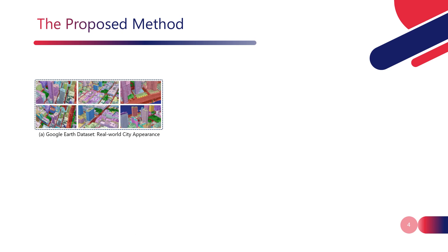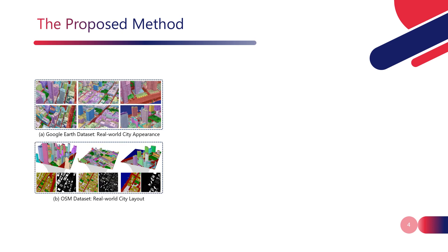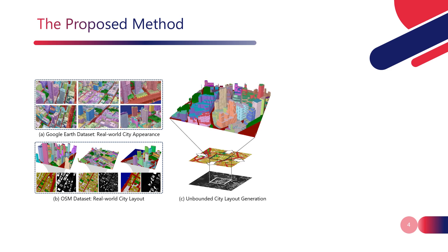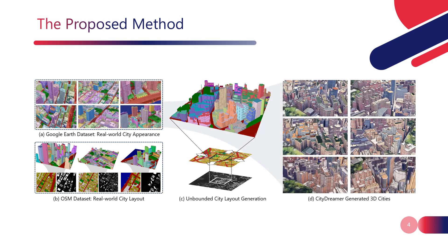Instead of using synthetic datasets, we construct the Google Earth dataset by collecting images from Google Earth. To generate a more realistic city layout, we create the OSM dataset. The unbounded city layout can be generated by performing image extrapolation on height fields and semantic maps. To generate realistic and diverse buildings, we assign instance labels for buildings. By leveraging the Google Earth dataset, the proposed CityDreamer can generate incredibly lifelike 3D cities.